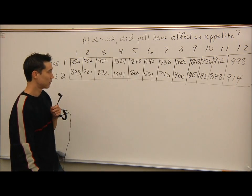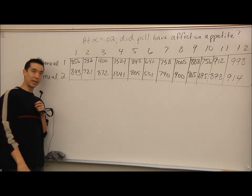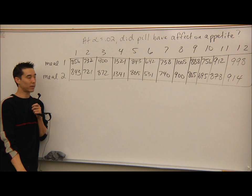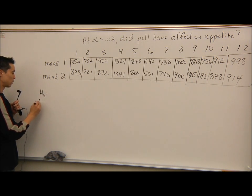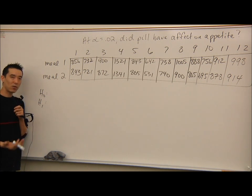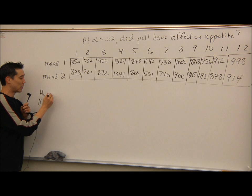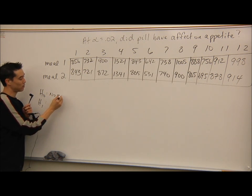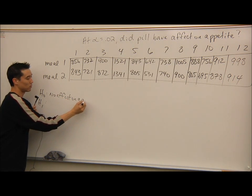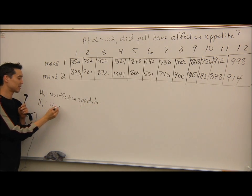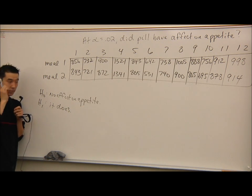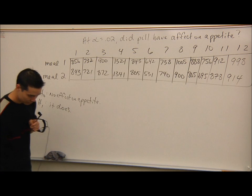Person 11 was 912 to 878, and person 12 was 998 to 914. This is called the paired sample sign test — paired because it's dependent or matched paired data. For H0 and H1: the normal position is that the pill had no effect on appetite; the alternative is that it does have an effect.